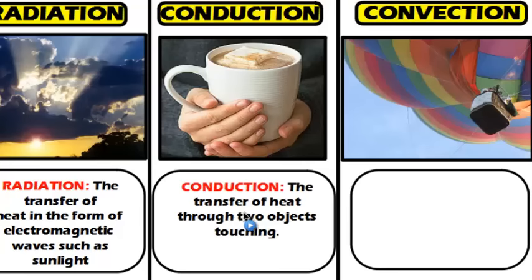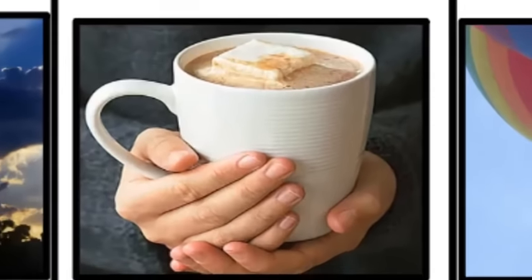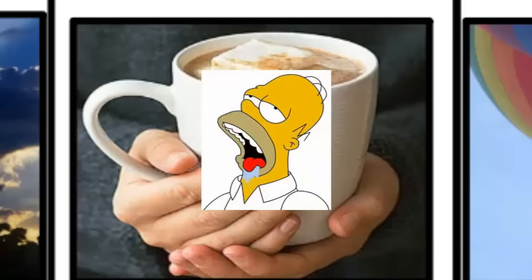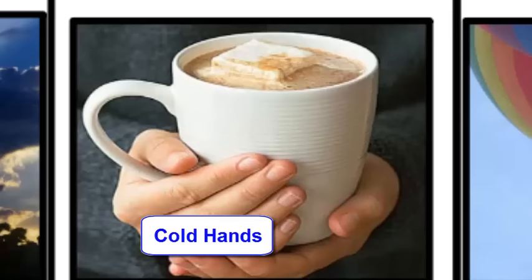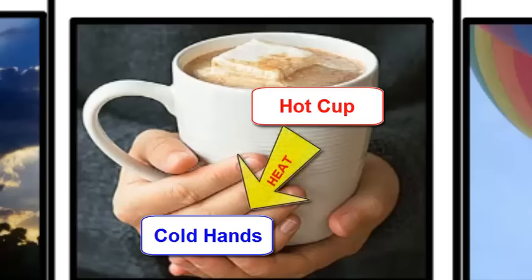Second, we have conduction. Conduction is the transfer of heat through two objects that are touching. As you can see in this picture, we have someone with their hands wrapped around a warm cup of cocoa. I'm sure we've all been there where we had cold hands and grabbed something hot to drink and wrapped our hands around the cup to warm them up. Because your hand is touching the hot cup, the heat from the cup is transferred into your hand through direct contact. If the cup was on the table and your hands were off it, your hands wouldn't warm up. But since you're touching it, the heat moves from the cup into your hand, warming it up.